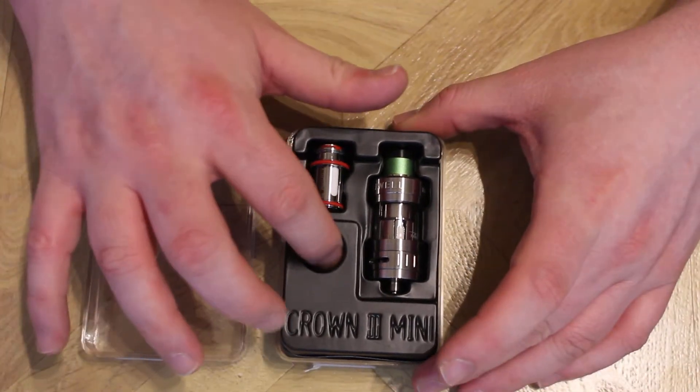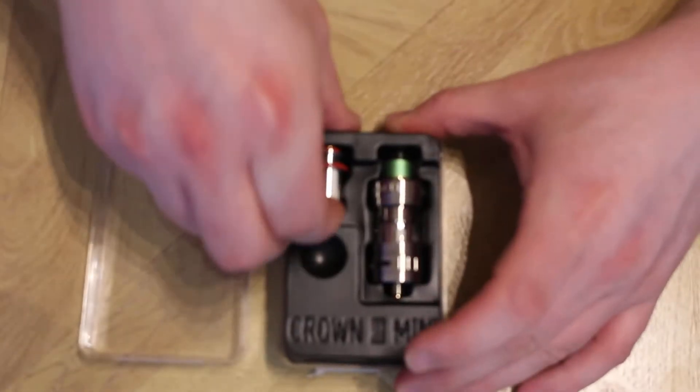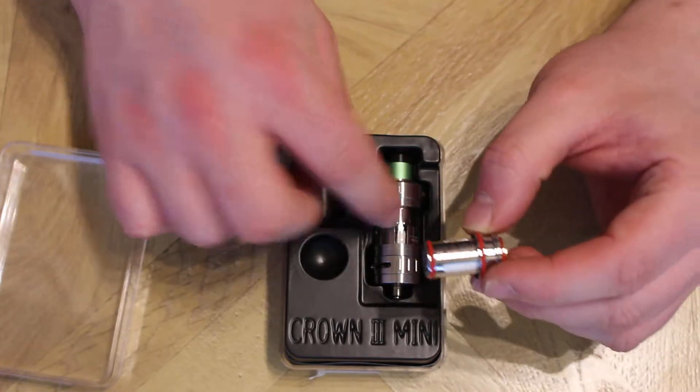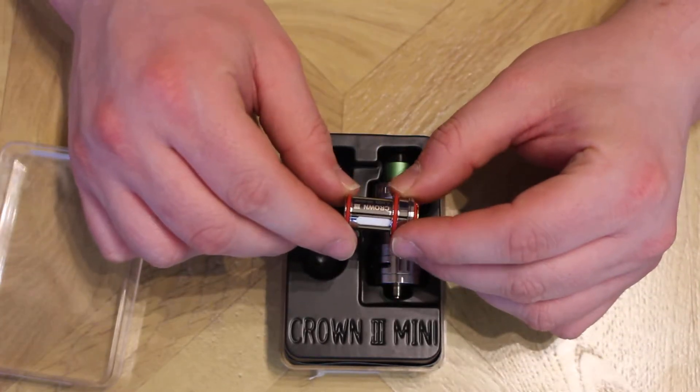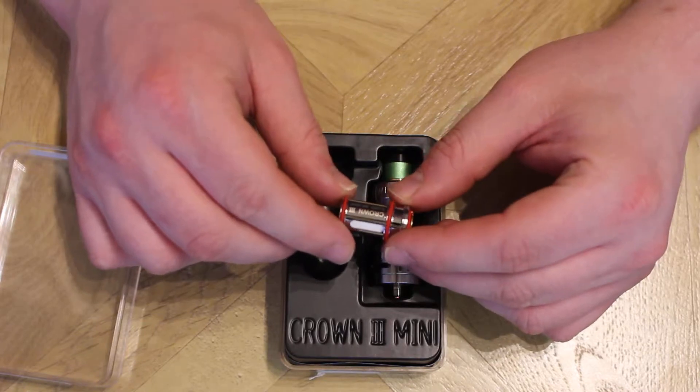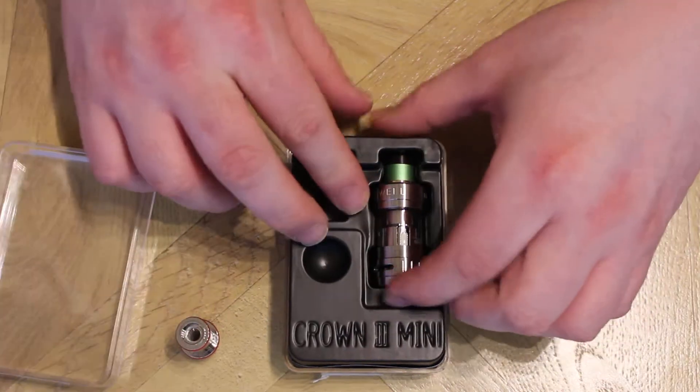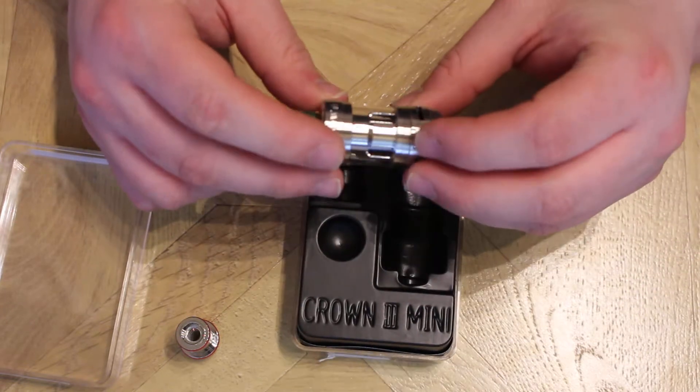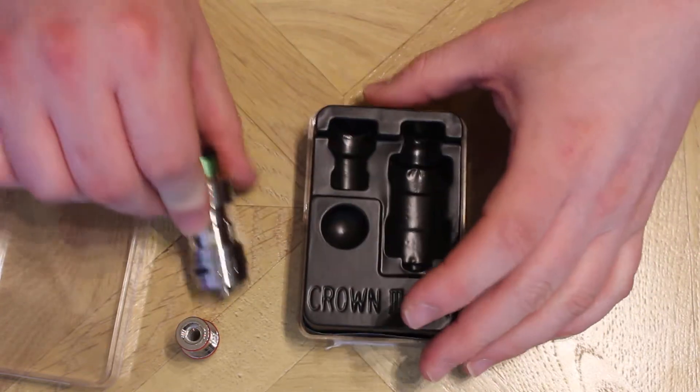So yeah, so there's nothing here, I don't know why they've got this hole there. Let's get that out. So we've got, I believe this is the second coil, I think there's one in there. So this is the 0.25 and it's 80 to 90 watts. Let's see if I can get this out, and yeah, there is a coil on there, so I'll put that to the side.